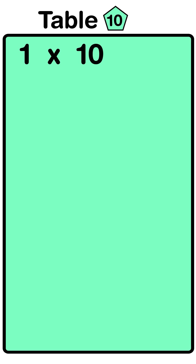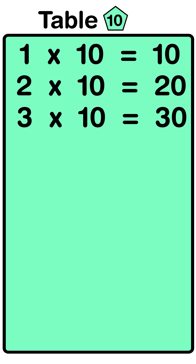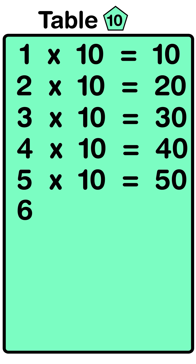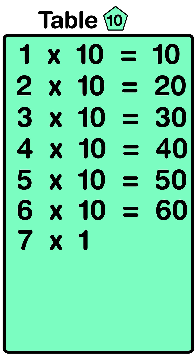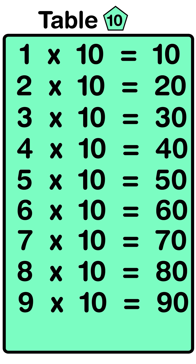One ten's are ten, two ten's are twenty, three ten's are thirty, four ten's are forty, five ten's are fifty, six ten's are sixty, seven ten's are seventy, eight ten's are eighty, nine ten's are ninety, ten ten's are one hundred.